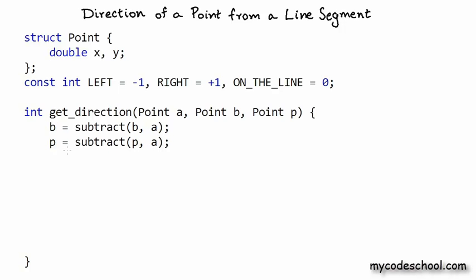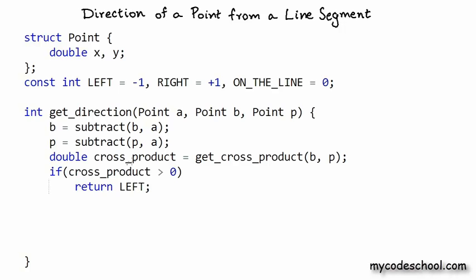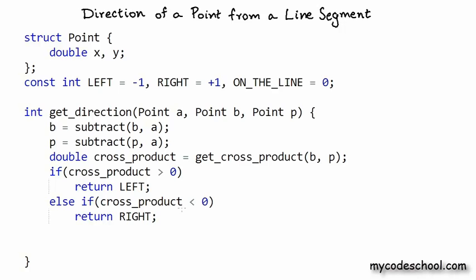Now we calculate the cross product of B and P. We assume a function get_cross_product exists, and write: cross_product = get_cross_product(B, P). The remaining logic is simple: if cross_product > 0, return LEFT; if cross_product < 0, return RIGHT; otherwise return ON_LINE.